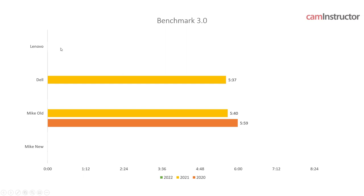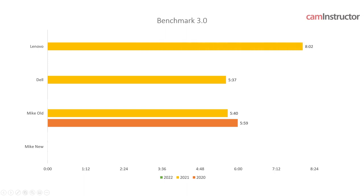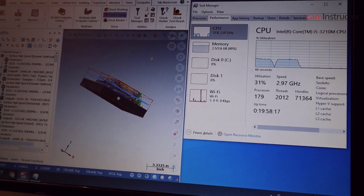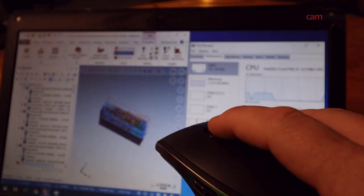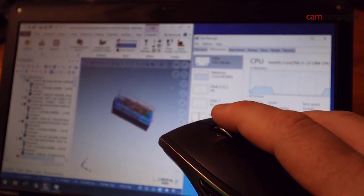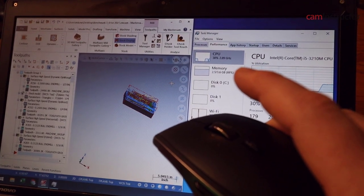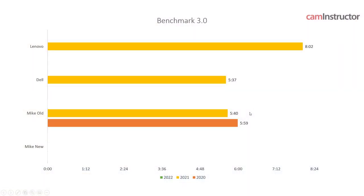The old Lenovo laptop took over eight minutes to process this file. You might think two minutes and 20 seconds isn't a big deal, but that time is very long to sit and wait. As you can see in this clip, when toolpaths are displayed on screen, I can't even rotate the model with toolpaths visible, and scrolling with the middle mouse wheel shows lag between input and movement. I would say this is unusable for this application.